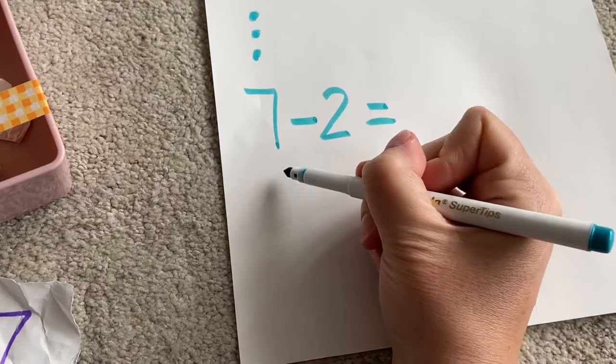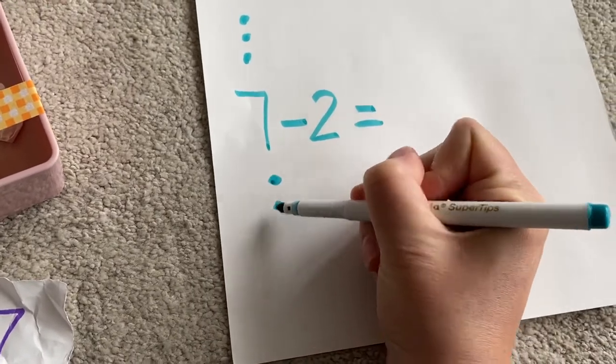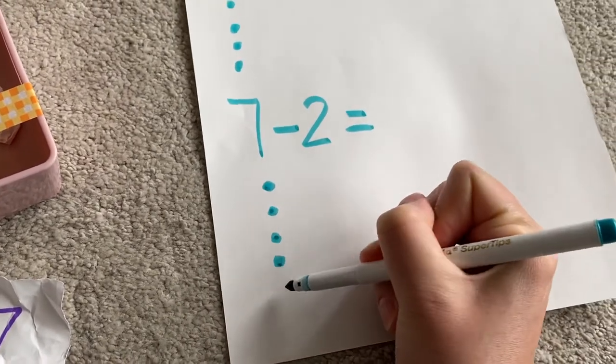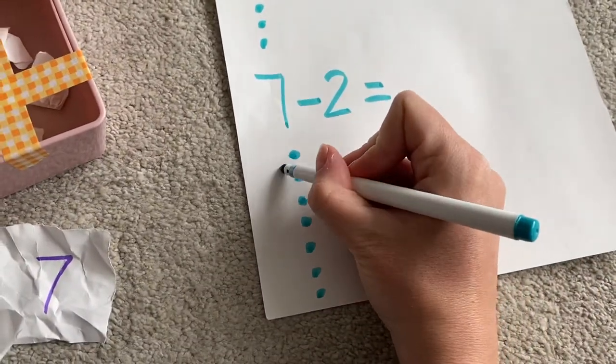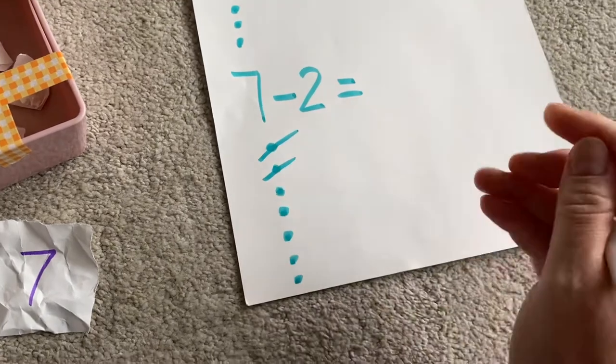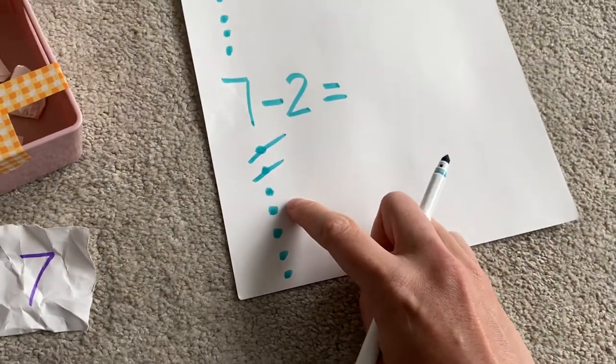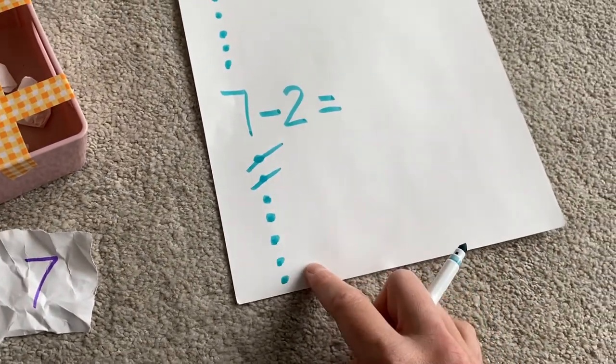How do we do the takeaway? So we'll draw out seven spots: one, two, three, four, five, six, seven. Now because we want to take away two, just cross two out. How many are you left with? One, two, three, four, five. And then write your answer there.